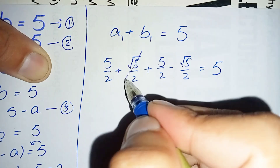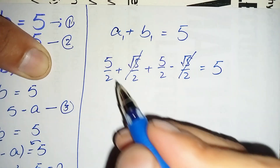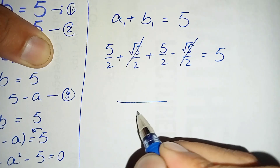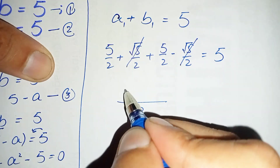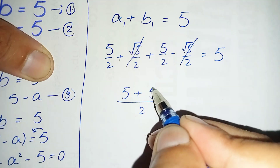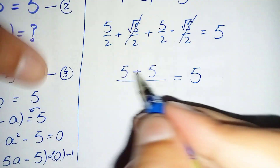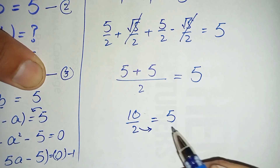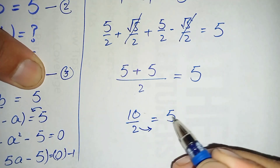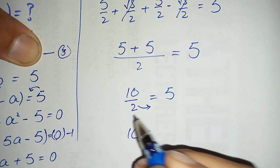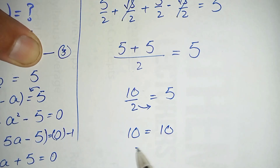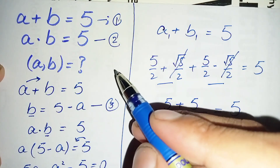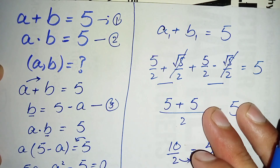The positive square root of 5 divided by 2 and the negative square root of 5 divided by 2 cancel out, leaving 5/2 plus 5/2. Taking the LCM gives 10/2 equals 5, which means 10 equals 5 times 2 equals 10. Since both sides are equal, the values of a₁ and b₁ are correct. If you like this video, don't forget to subscribe to my YouTube channel. Thanks for watching.